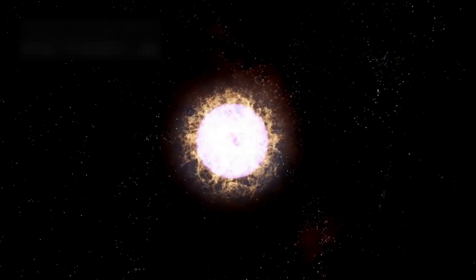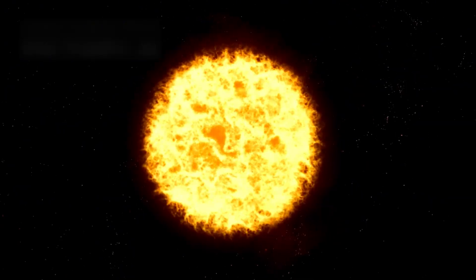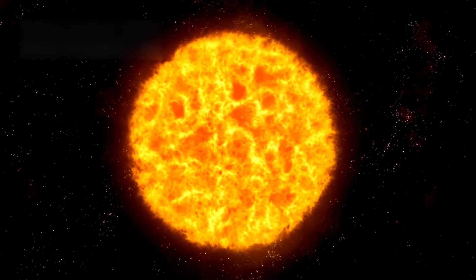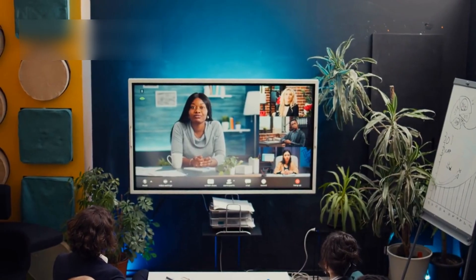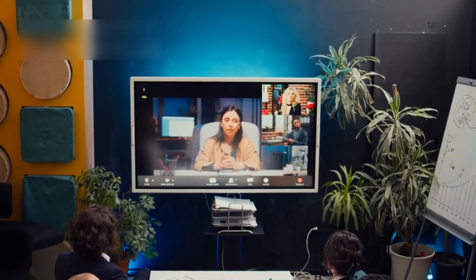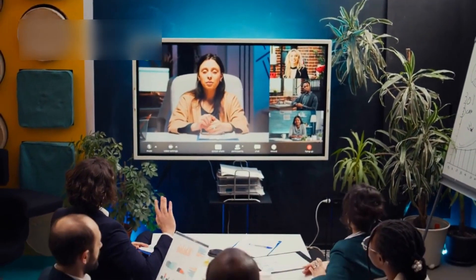The unpredictability of Betelgeuse is part of what makes it so exciting. For the first time, we can observe a red supergiant in action, capturing data that could help predict future stellar deaths. Students and researchers across the globe are pouring over data, writing papers, and submitting telescope proposals to keep their eyes on the star.